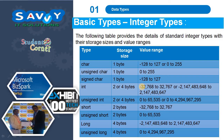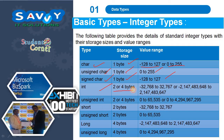Now coming to the basic types and integer types. The following table provides the details of standard integer types with their storage sizes and value ranges. Character takes 1 byte of memory, with value ranging from minus 128 to plus 127, or 0 to 255. Unsigned character takes 1 byte, range 0 to 255. Signed character takes 1 byte, range minus 128 to plus 127.